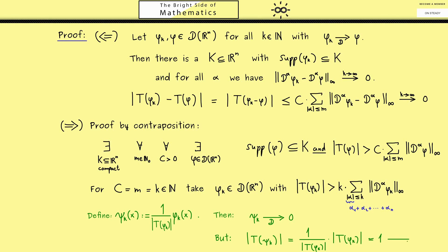In other words, it does not converge to zero. Now this simply means the linear map T is not continuous. And that is what we wanted to show from the beginning, so our proof is finished.